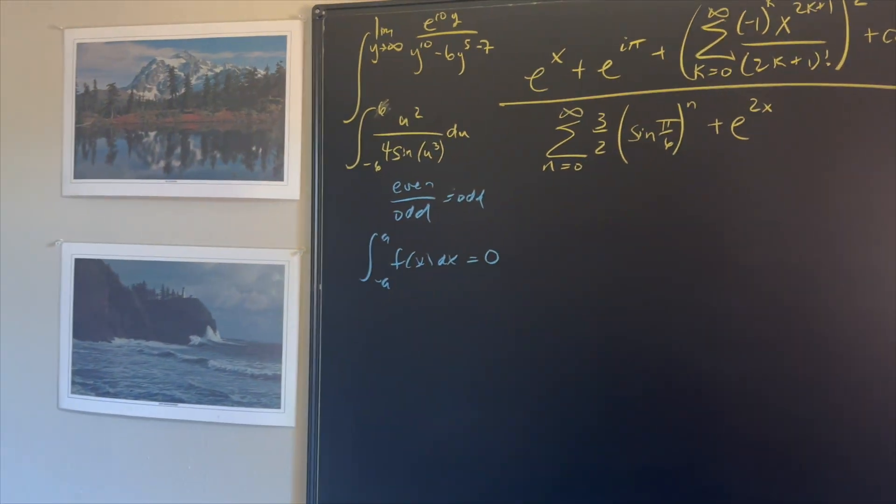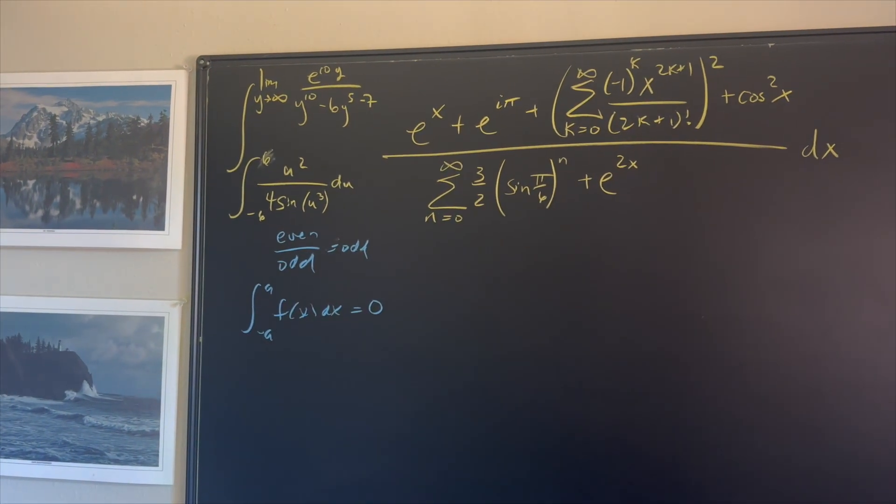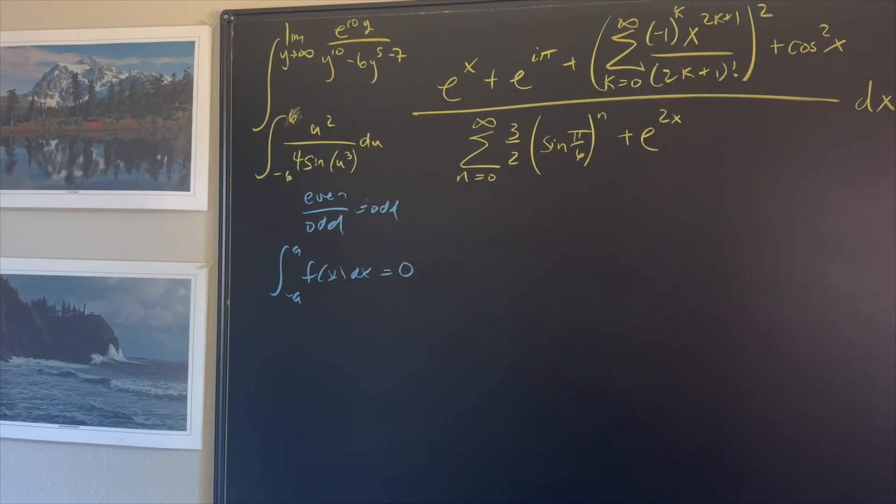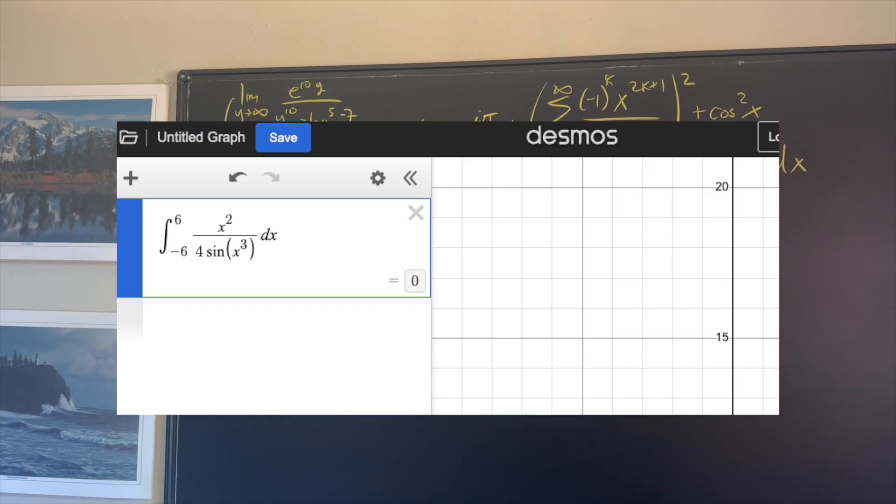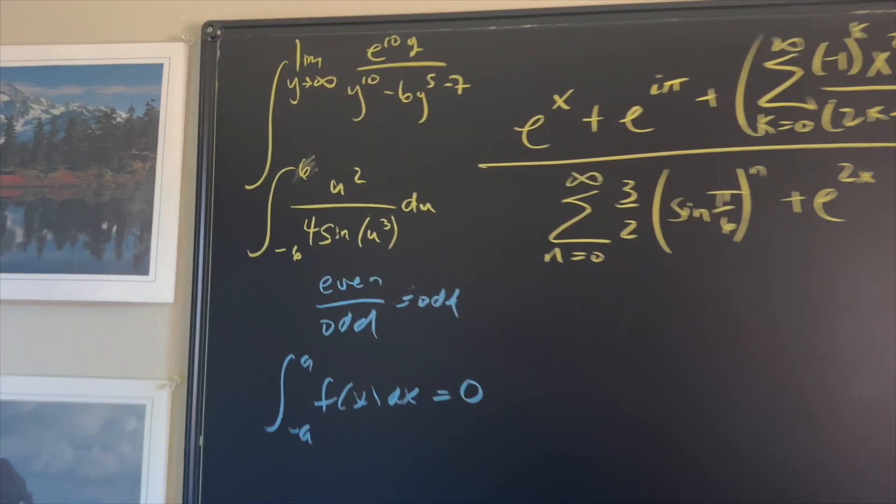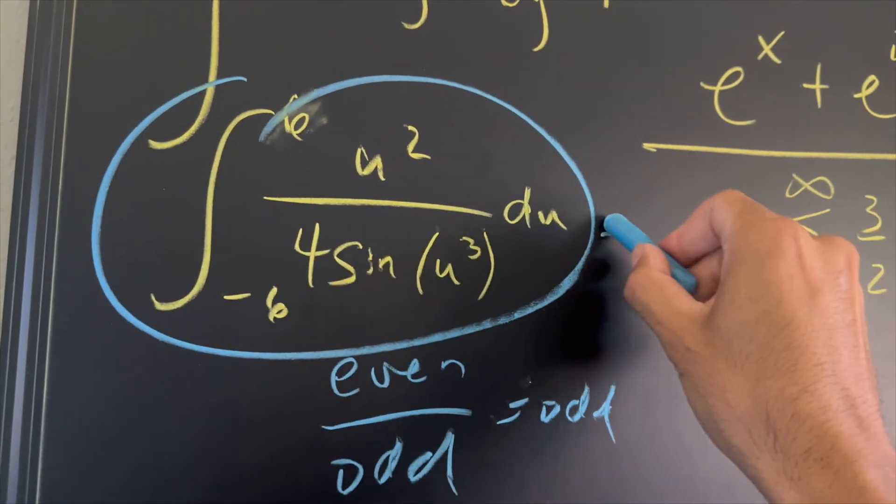Now, this one was probably the most controversial part of this entire integral because a lot of people were saying that it's undefined at zero. And though that's true, you can put it on Desmos and you'll see that you'll also get zero as that integral. So we already know that this bottom bound here is going to be zero.